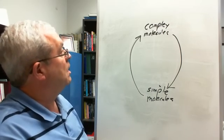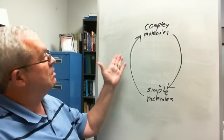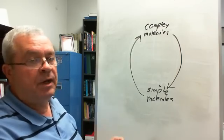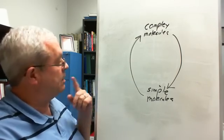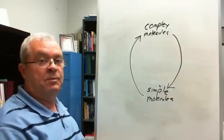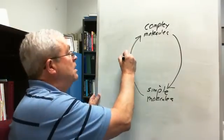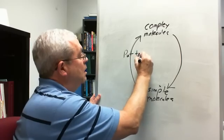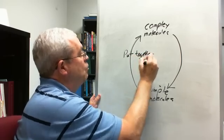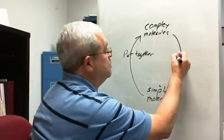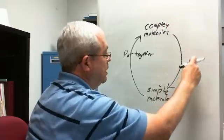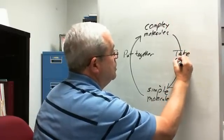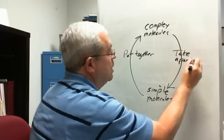But first of all, one side of this circle is a put-together side. One's a take-apart side. What's this side over here? Put-together or take-apart? Let's see, simple to complex, that must be the put-together side, right? Simple molecules put together to form complex molecules. This must be the take-apart side here. Complex molecules being taken apart to form simple molecules.